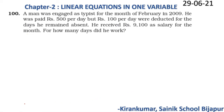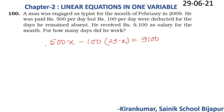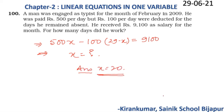According to the question: 500x − 100(29 − x) = 9100. On simplification, we find the value of x, which tells us the number of days he worked. Try solving on your own — you will get the answer as x = 20 days.